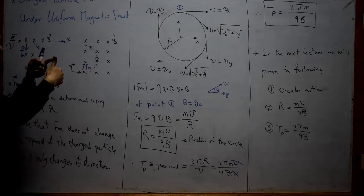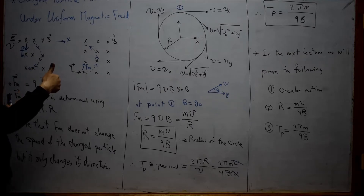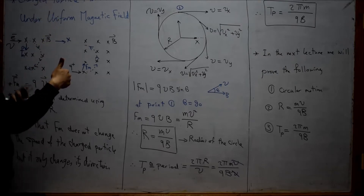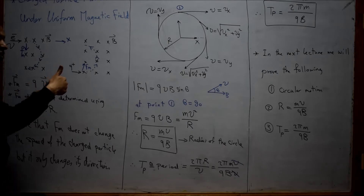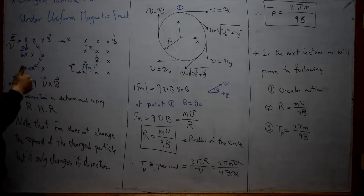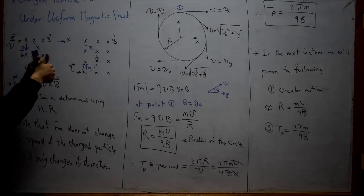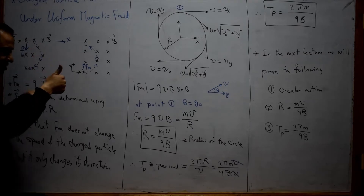The direction of the thumb is the direction of the force. But it can be in the same direction as the thumb, or in the opposite direction, according to the charge of the particle itself. In this case, the charge is negative, so moving from V to B gives this direction of the thumb. Therefore, the magnetic force will be in the opposite direction.